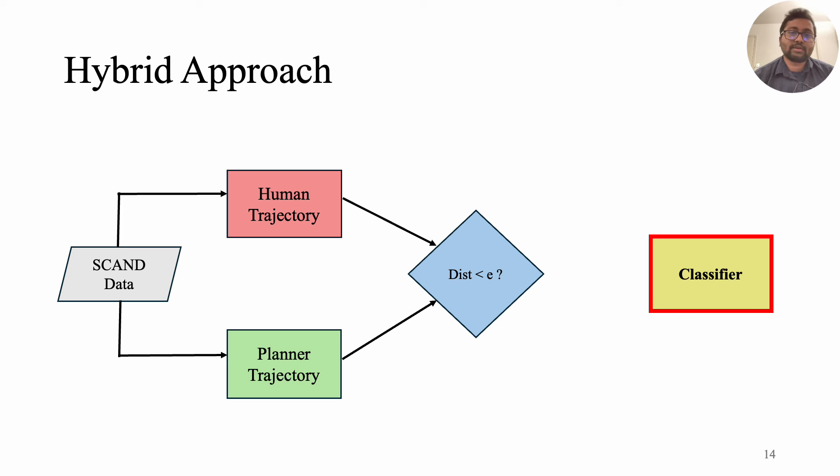Given a scenario, if the distance between human trajectory and planner's trajectory is less than some threshold, we classify it as trivial scene or positive class. If the distance is greater, which means the scenario is complex and classify it as negative.